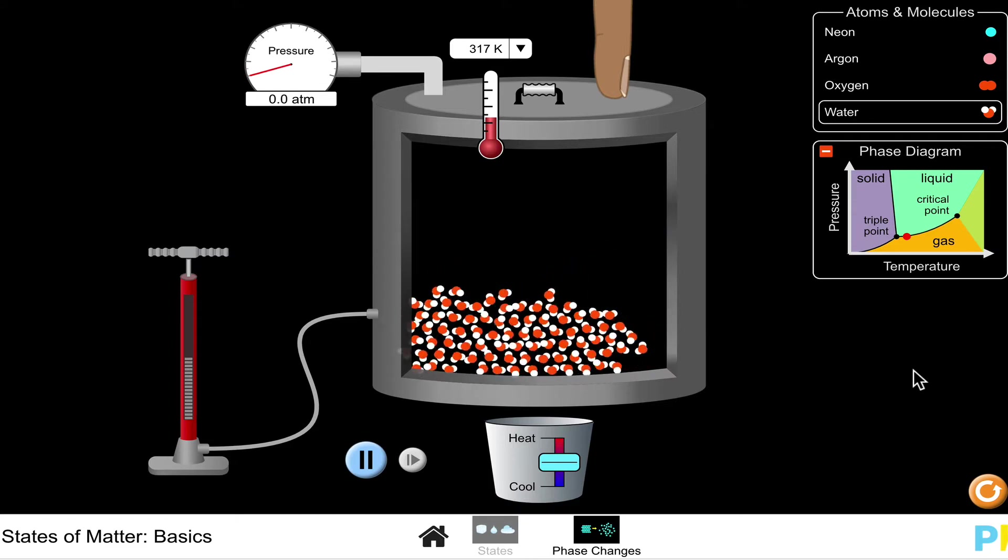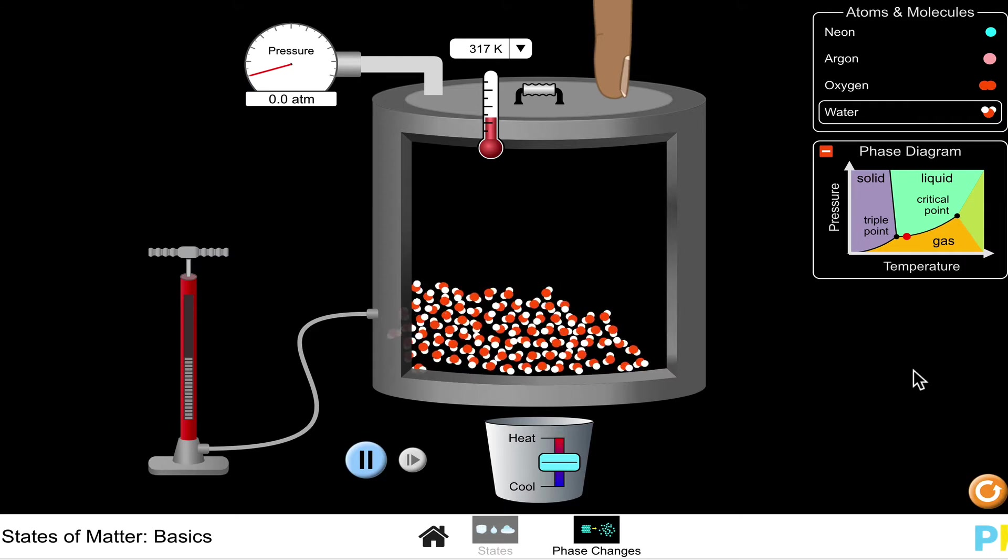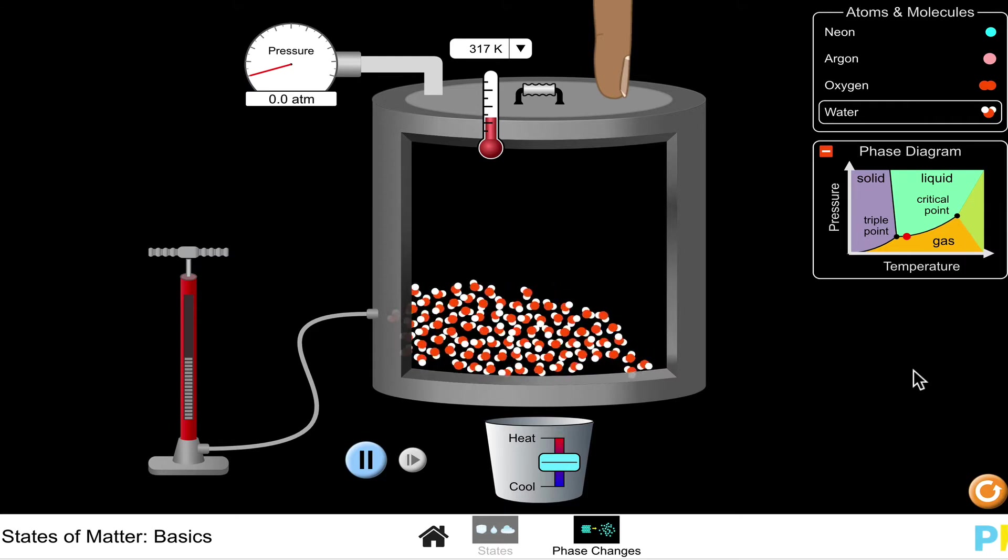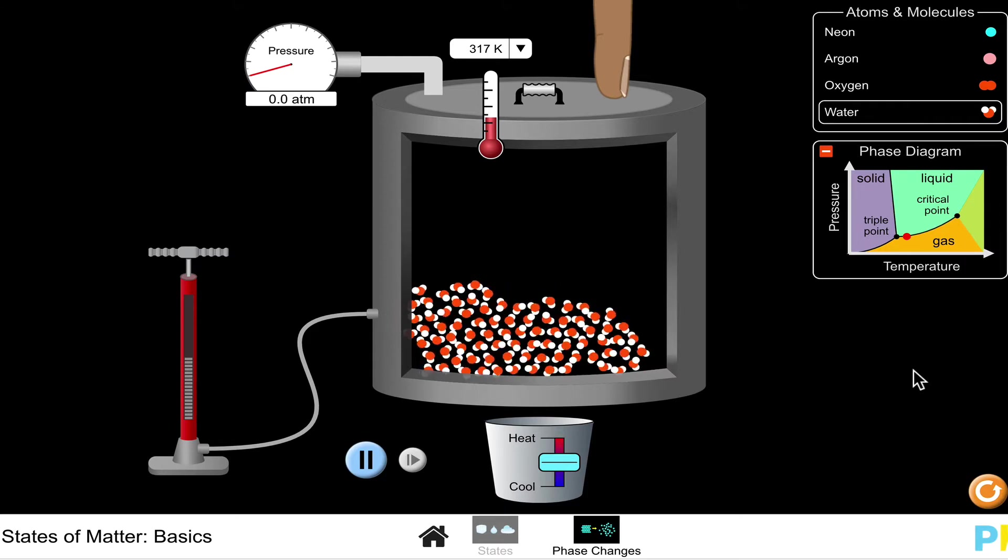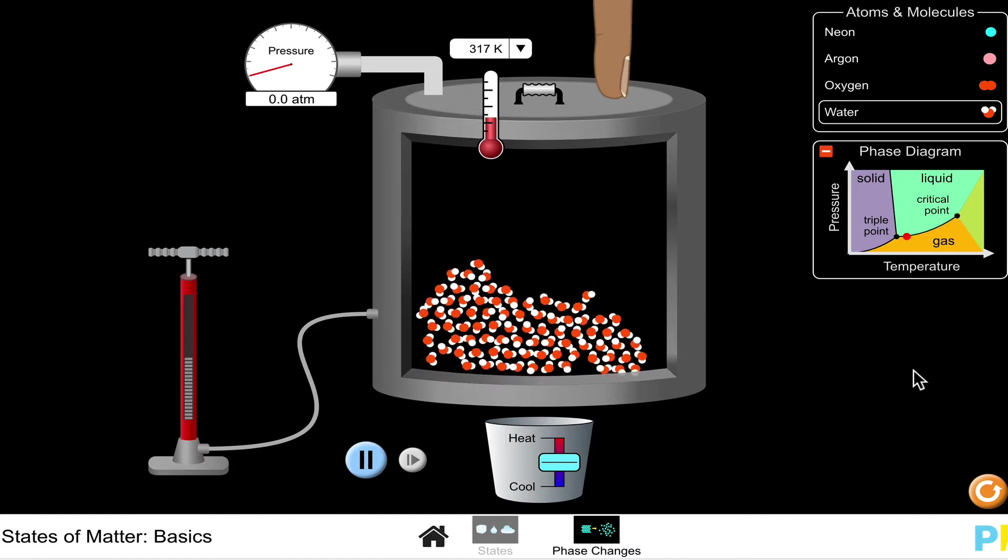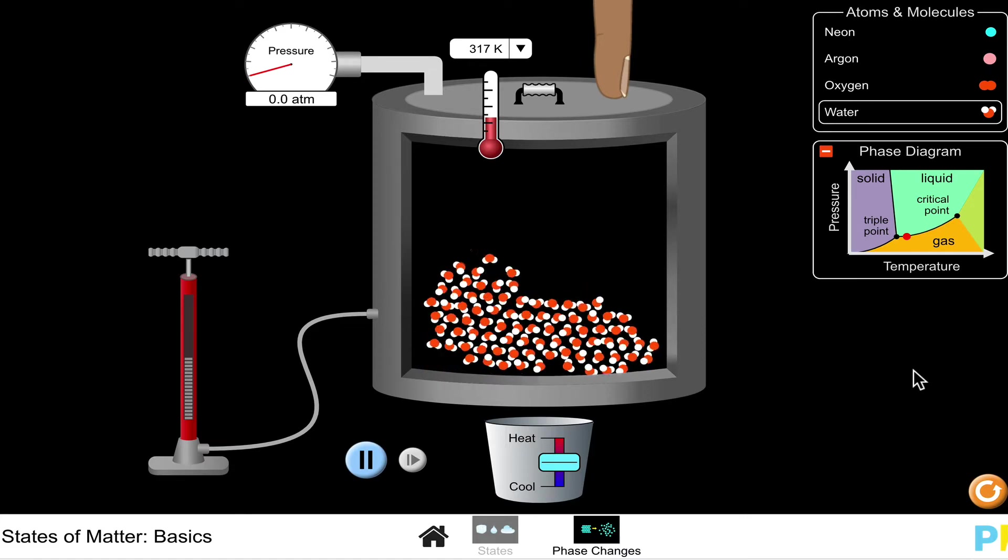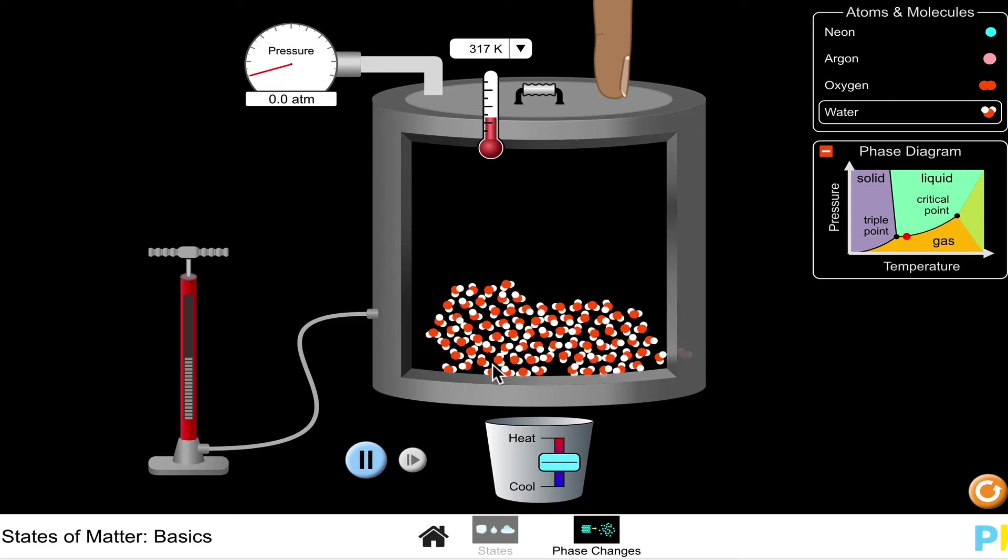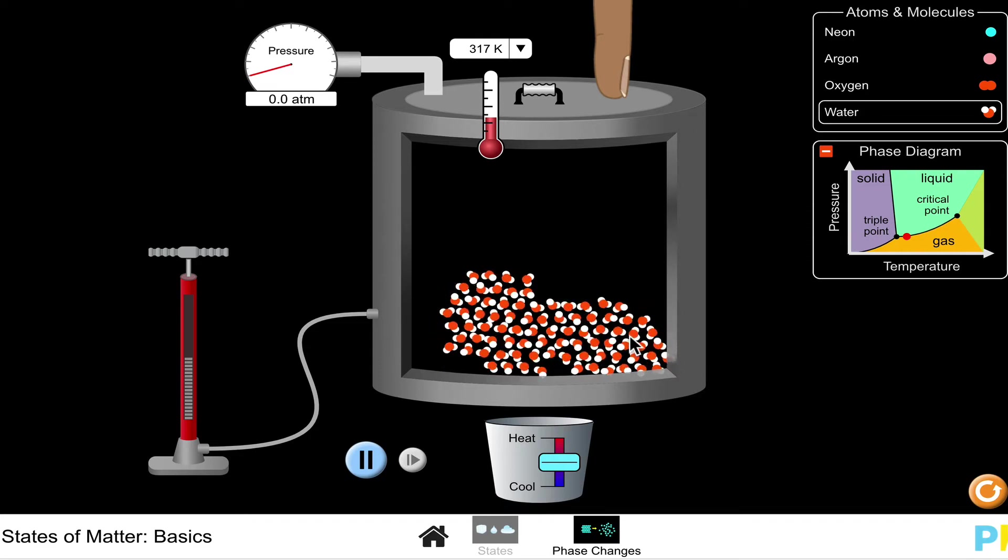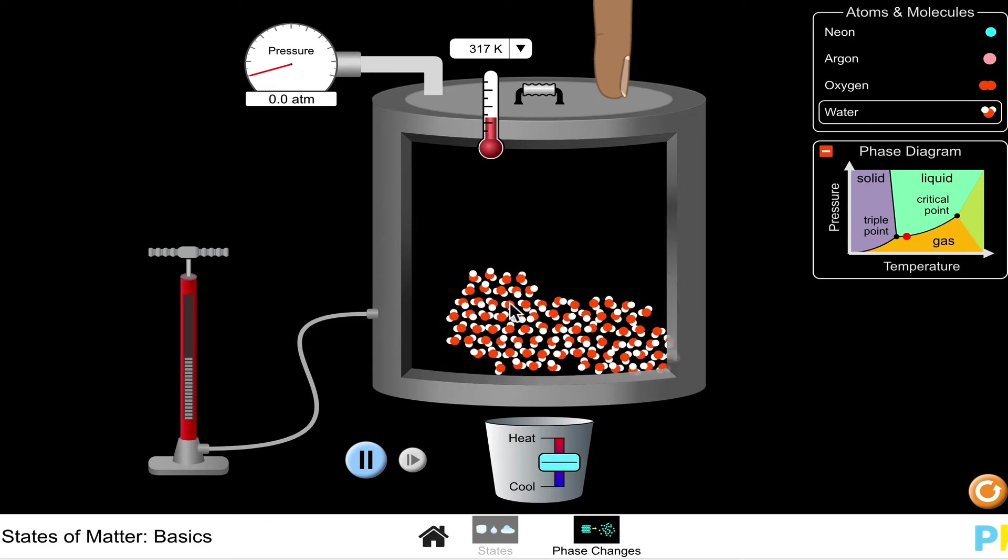Before we get into the properties, I want to start with the sub-microscopic level so we're all on the same page about how to think about a liquid at the molecular level. Liquids are characterized by flow; the molecules are to some extent still bound to one another but able to flow and move over and past one another.